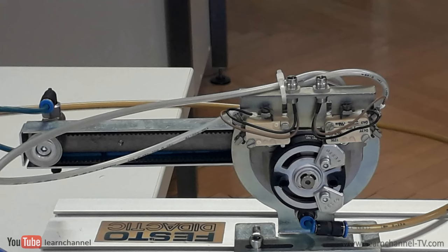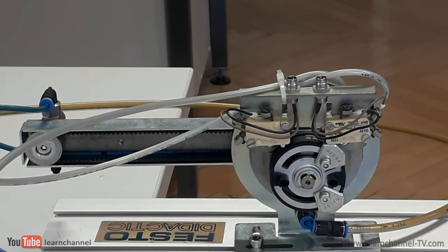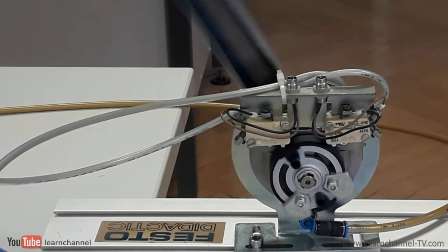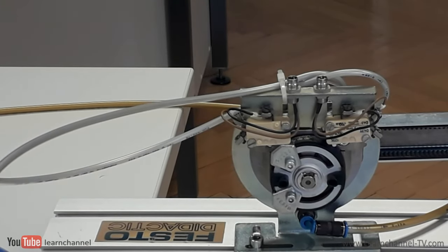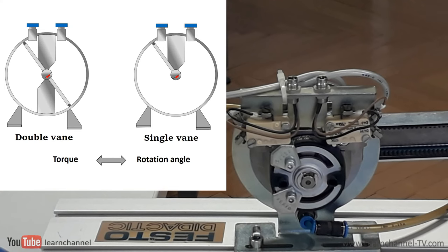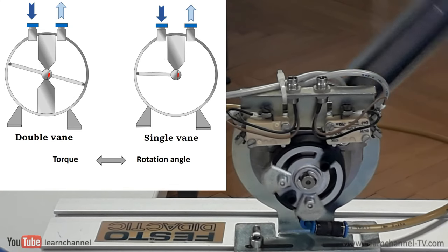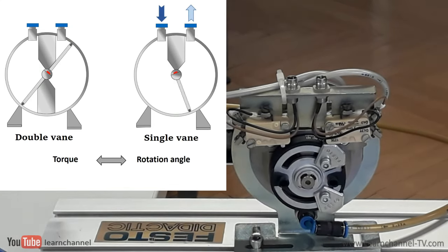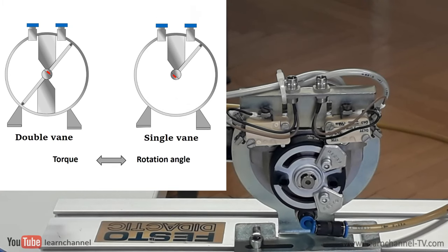Vane cylinders have a cylindrical chamber in which a vane is mounted to a central shaft. Air pressure on one side forces the vane to rotate until the end of the stroke is reached. You get vane actuators in two designs. The single-vane design has a relatively large rotary motion, up to 280 degrees typically.